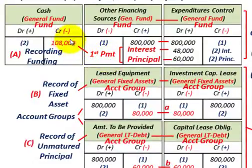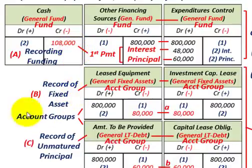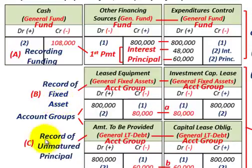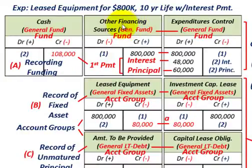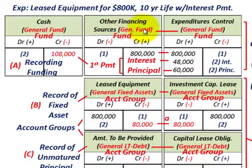We're going to look at this in T-account form, broken down between our general fund and then under our general fund, the two different account groups. We'll first look at the inception of the lease, and then the first interest payment on this lease. Under our fund — the general fund — this is where we'll be recording our funding. And then under our fund group, the general fund, this is where we're going to set up our account groups: recording our fixed asset from this lease, and then recording the unmatured principal on this lease.